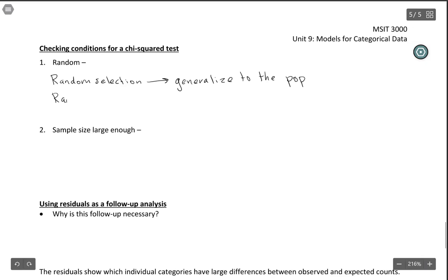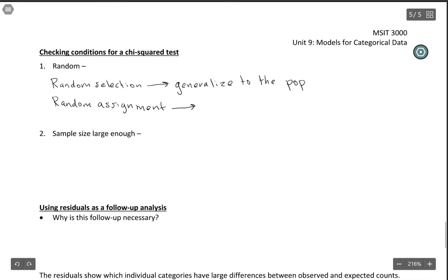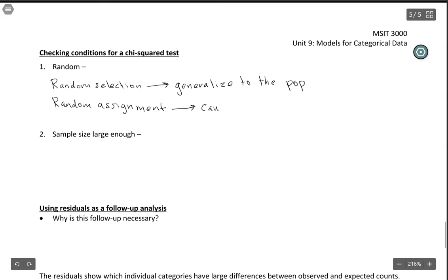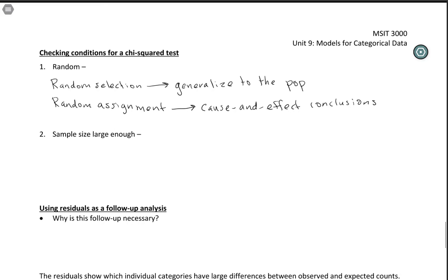The other option is random assignment. The example where we looked at different size choice sets is more like random assignment — it's more or less random whether people see the small or the large choice set. That's where we're hoping to make cause and effect conclusions, because random assignment balances out any potential confounders, so you end up with two comparable groups.